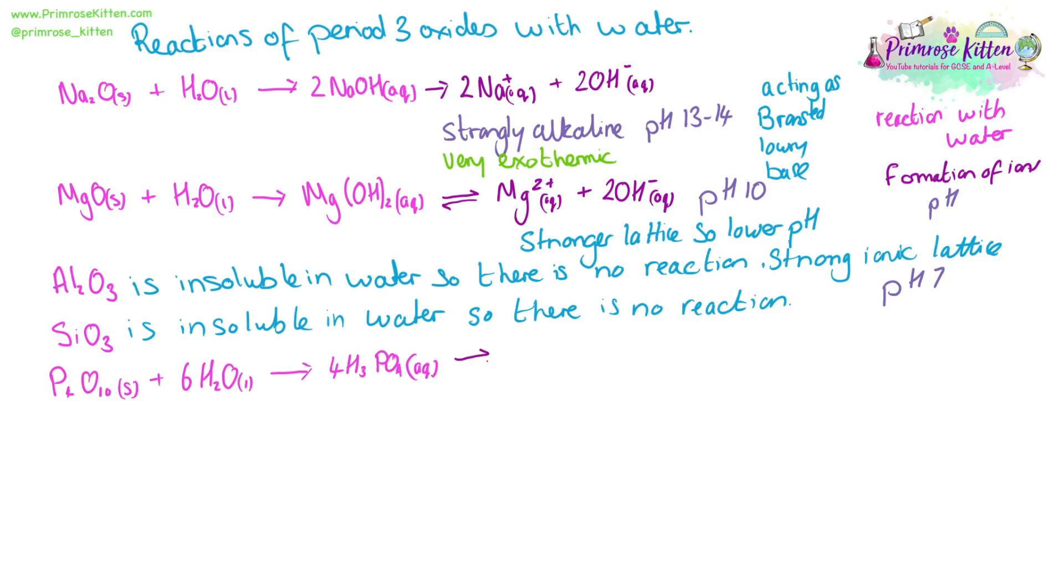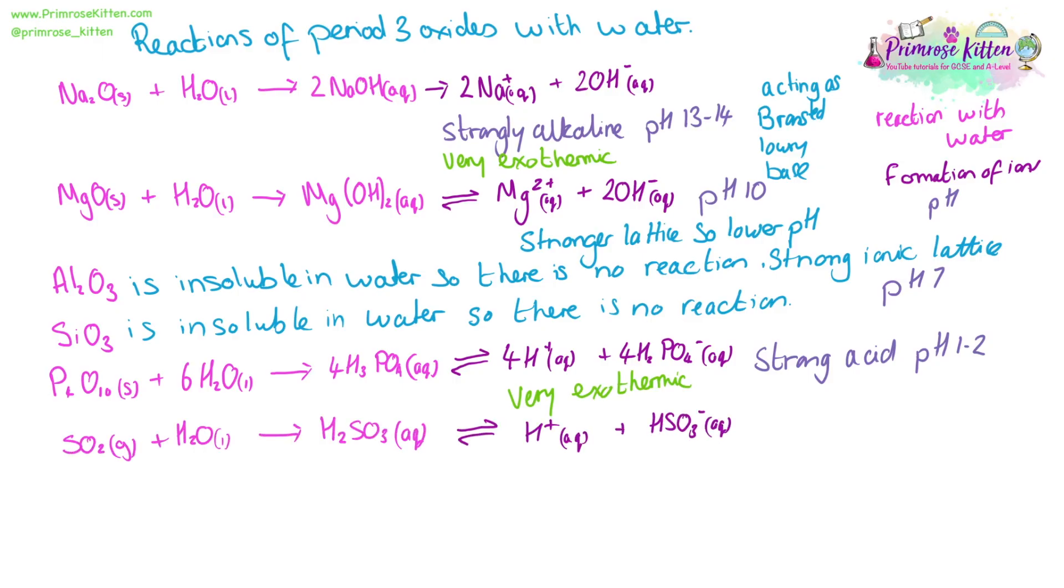P4O10 will react with water to give us phosphoric acid. This is a very exothermic reaction and it is a strong acid. It has a pH of 1 to 2. Sulfur dioxide will react to give us sulfurous acid. It will have a pH of 2 to 3 and this is a weak acid. Sulfur trioxide will react to give us sulfuric acid. This has a lower pH at 0 to 1 and this is a strong acid.